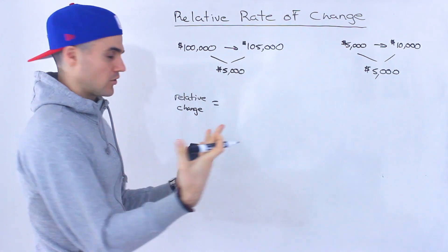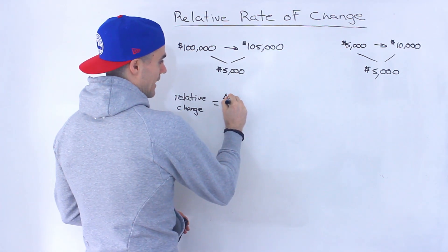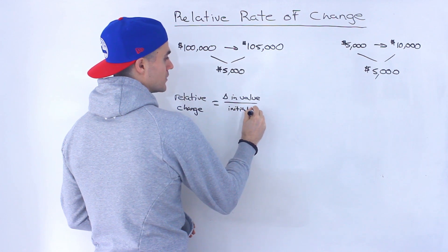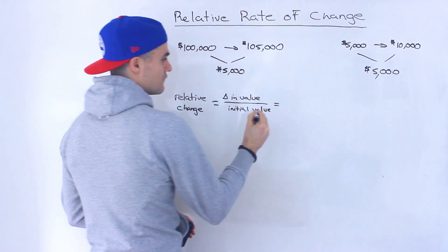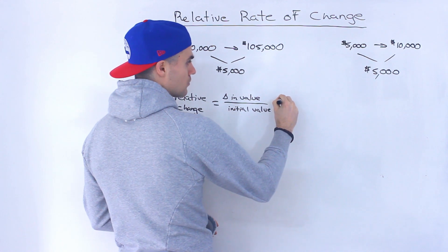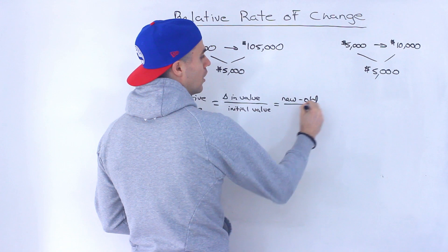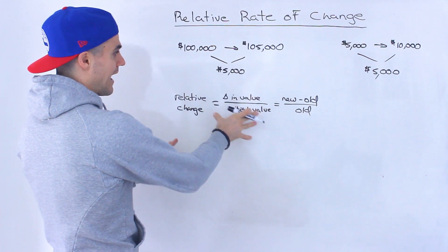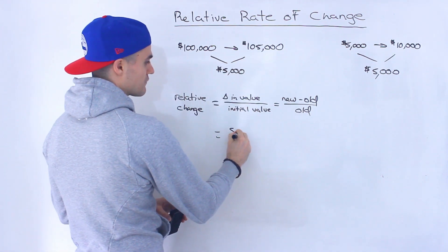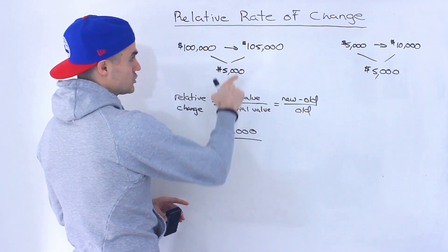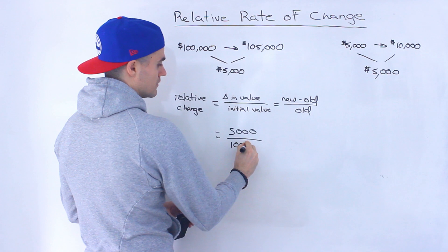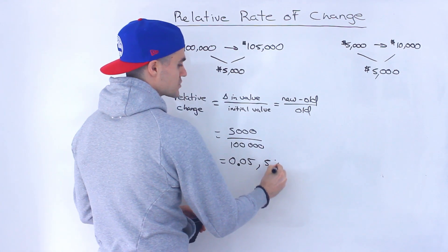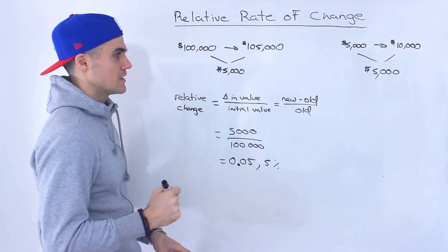But the relative change is going to be a lot different. Relative change, in general, is basically the change in value over the initial value. I've shown this as the new value minus the old value, all over the old value or the initial value. So if we apply this formula, the change in value is $5,000 and the initial value was $100,000, and you get 0.05, or a 5% change.